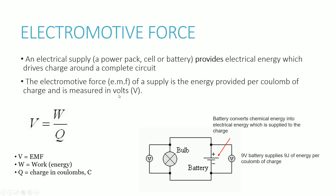Electromotive force is a fairly difficult concept to explain, but it is basically an electrical supply. If you think about a power pack, cell, or battery, those are all electrical supplies, and they provide electrical energy which drives charge around a complete circuit — the charge gains electrical energy from the supply. By definition, the electromotive force of a supply is the energy provided per coulomb of charge and is measured in volts. The formula is EMF (V) equals work or energy divided by the charge in coulombs.